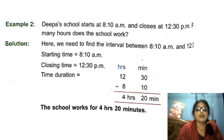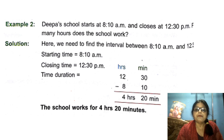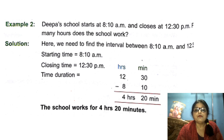My dear students, your next example is: Deepa's school starts at 8:10 a.m. and closes at 12:30 p.m. How many hours does the school work? It means you have to find out how many hours school is going on. The solution is given here. We need to find out the interval between 8:10 a.m. and 12:30 p.m. So first, write the starting time — 8:10 a.m. — and closing time — 12:30 p.m. You have to find out the time duration, so you subtract the starting time from the closing time.